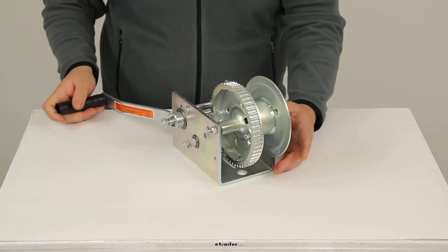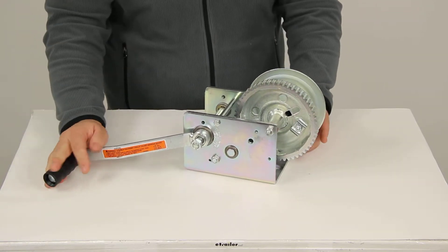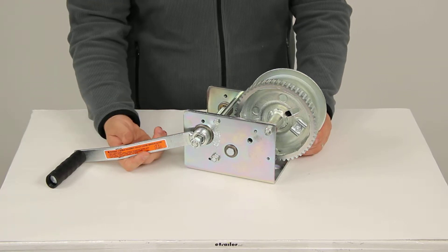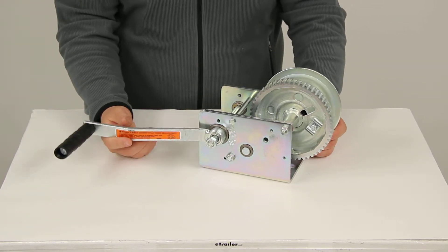It's made from rugged construction. It's going to allow you to raise and lower loads with minimal effort. The convenience of having a brake winch is that your load will actually be locked in place even when your handle is released.